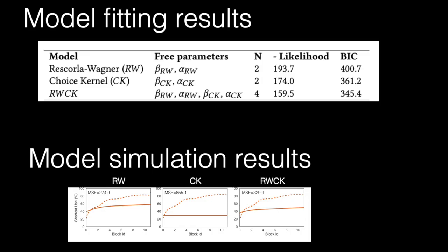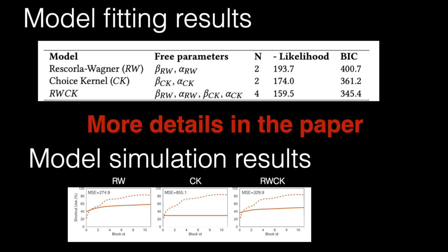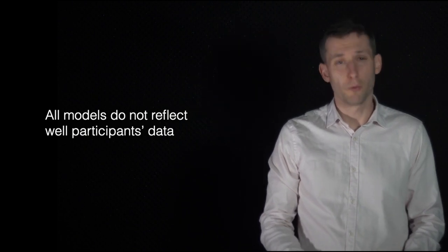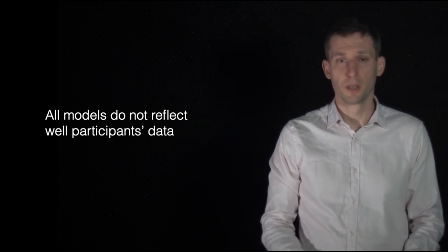So, the models should predict whether the participant will choose the action menu or the action shortcut. To compare the models, we compute the BIC score and perform simulations. You can find all details in the paper. All in all, the three models do not reflect well participant data.